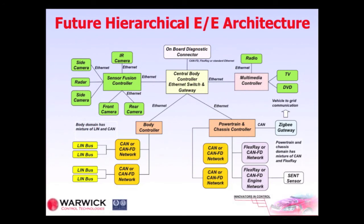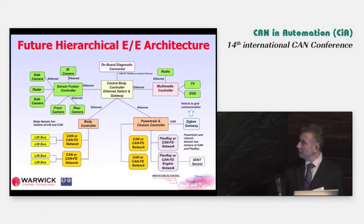LIN will remain at the low-end body control area. CAN and CAN-FD will converge and have applications in many areas including powertrain. FlexRay will have its place. In the future, you'll see a lot more Ethernet, probably replacing MOST, likely as a backbone for infotainment, radar systems, and vision systems such as lane departure warning. There are a lot of high-end ADAS systems appearing now that need the bandwidth.